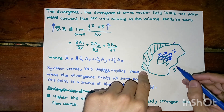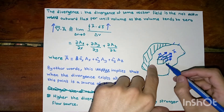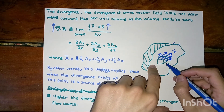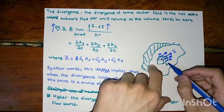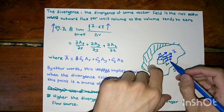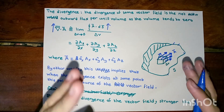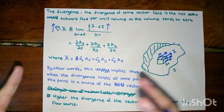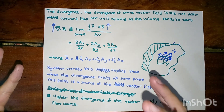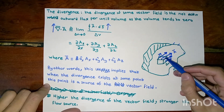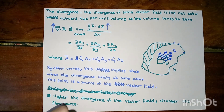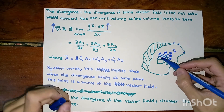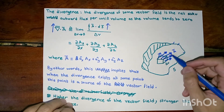And if we make this volume so tiny, if we make it tend to zero, it tells us the outward flux per unit volume as this volume becomes point-like. If we have outward flux getting out of some point, this means that this point is producing this vector field itself.